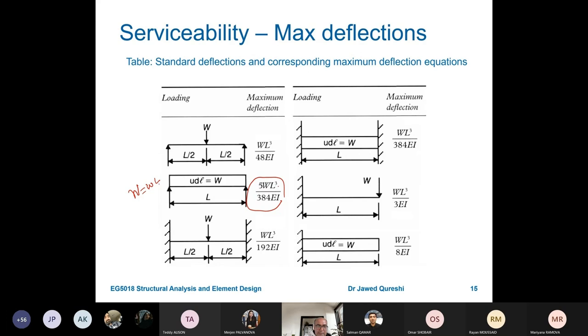Here, capital W is small w, that is in kilonewtons per meter, times L already. So L is already multiplied. That's why it is capital W L^3 over 384EI.